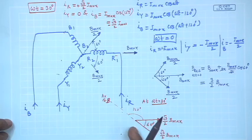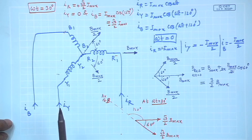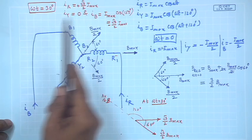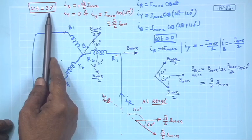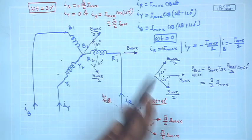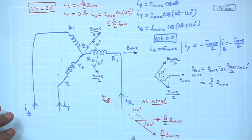Welcome. We were trying to find out the resultant field when time is such that omega t equals 30 degrees — all angles are electrical.